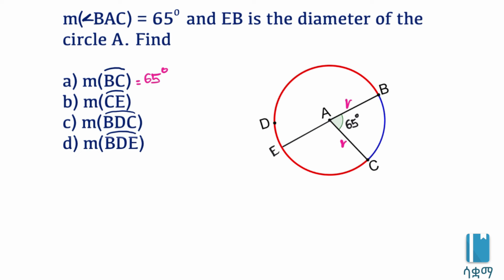The measure of the angle is equal to 65 degrees. The diameter of the circle gives an angle equal to 80 degrees. The angle values being worked with are 80 degrees and 65 degrees.